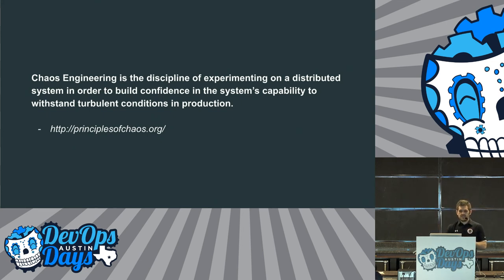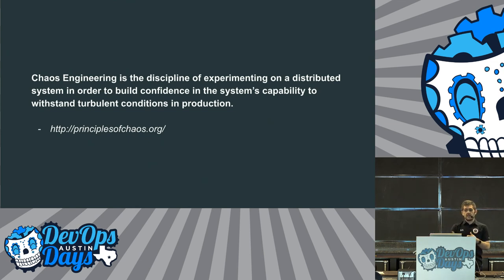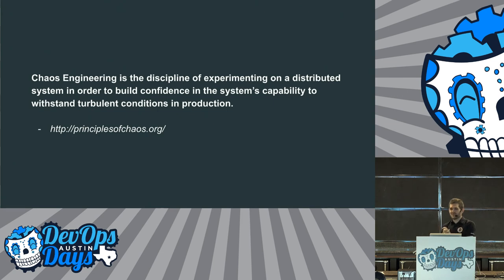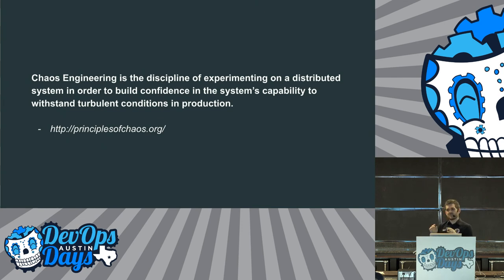Important things to note: distributed systems — this is typically done on things running in a distributed fashion. If you have a monolith, you can do chaos engineering on it, but it's easier because it's in one spot, a stationary target. You want to build confidence — the whole point is to gain confidence and knowledge, feel good about your system's capability. And then there's the fun part: turbulent conditions, qualified with in production. You can create turbulent conditions in your dev environment, but we're talking about going into production, live running systems, and tinkering with things.